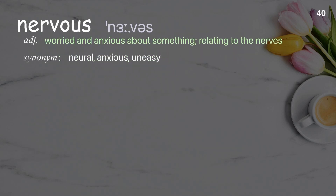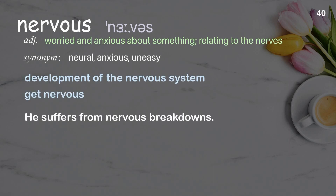Nervous: Worried and anxious about something; relating to the nerves. Examples: Development of the nervous system, Get nervous. He suffers from nervous breakdowns.